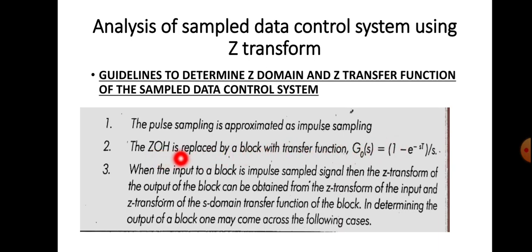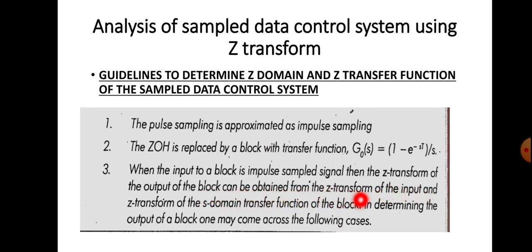We have to replace the ZOH by this transfer function. When the input to the block is an impulse-sampled signal, the Z-transform of the output of the block can be obtained from the Z-transform of the input and the Z-transform of the s-domain transfer function of the block.